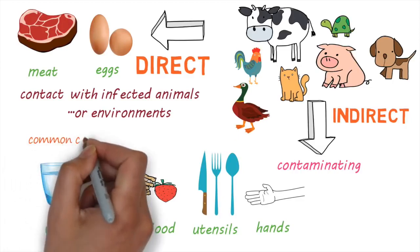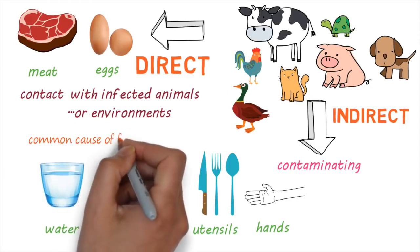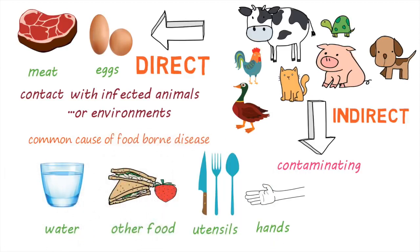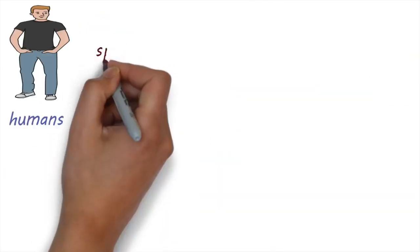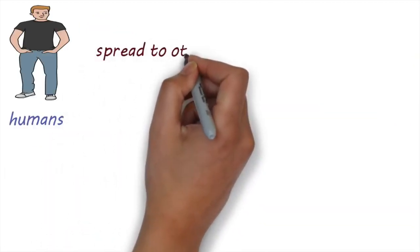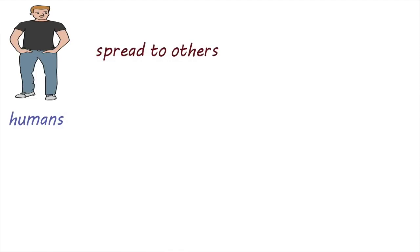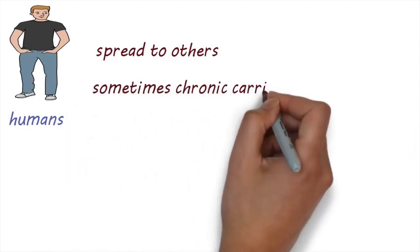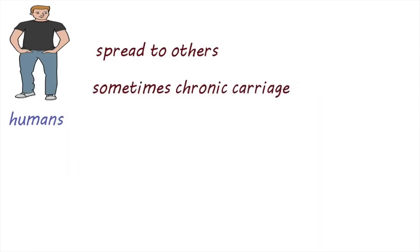Salmonella is one of the most common causes of foodborne diseases in the world. People with Salmonella infection can also spread the infection to others. Sometimes people can have Salmonella for a long time without showing any symptoms.